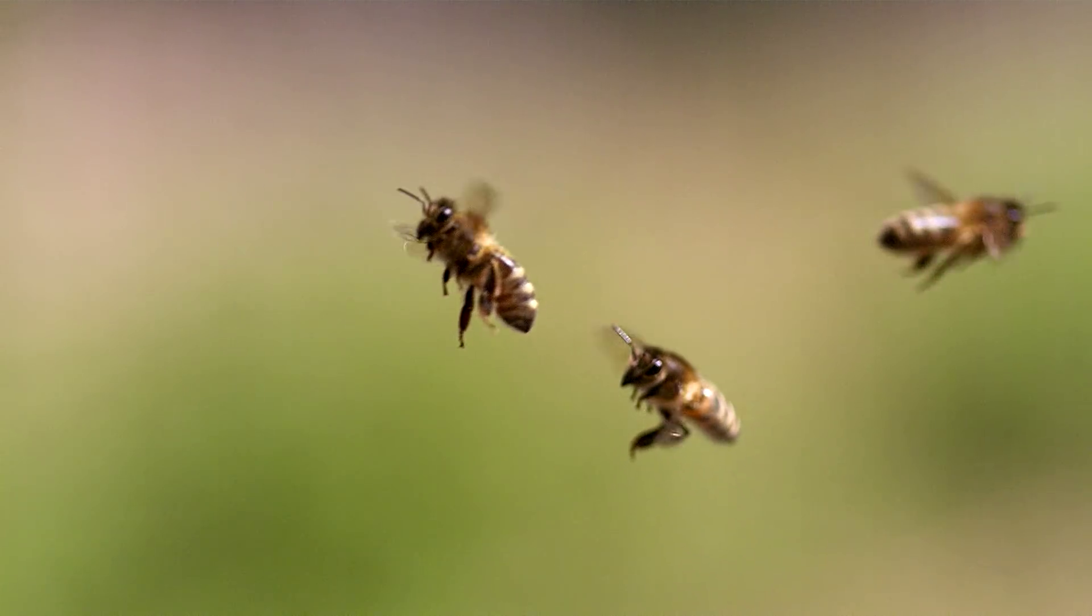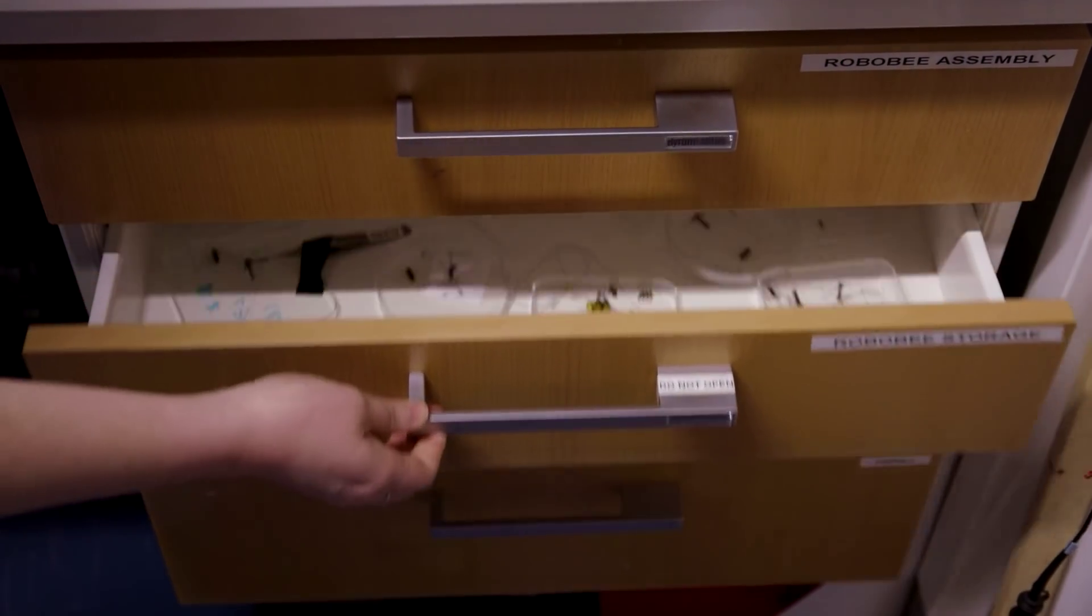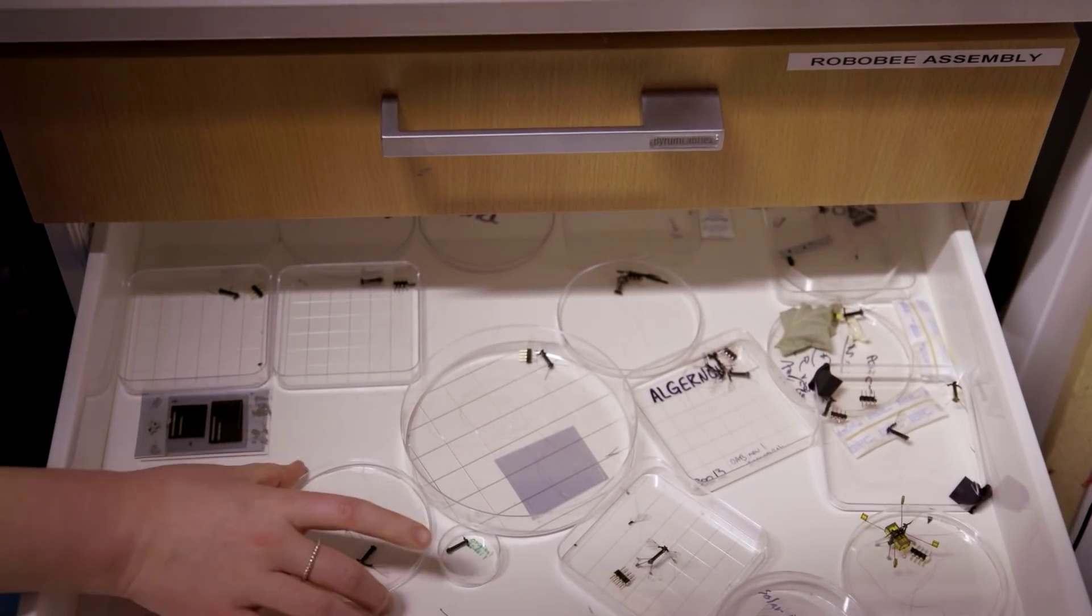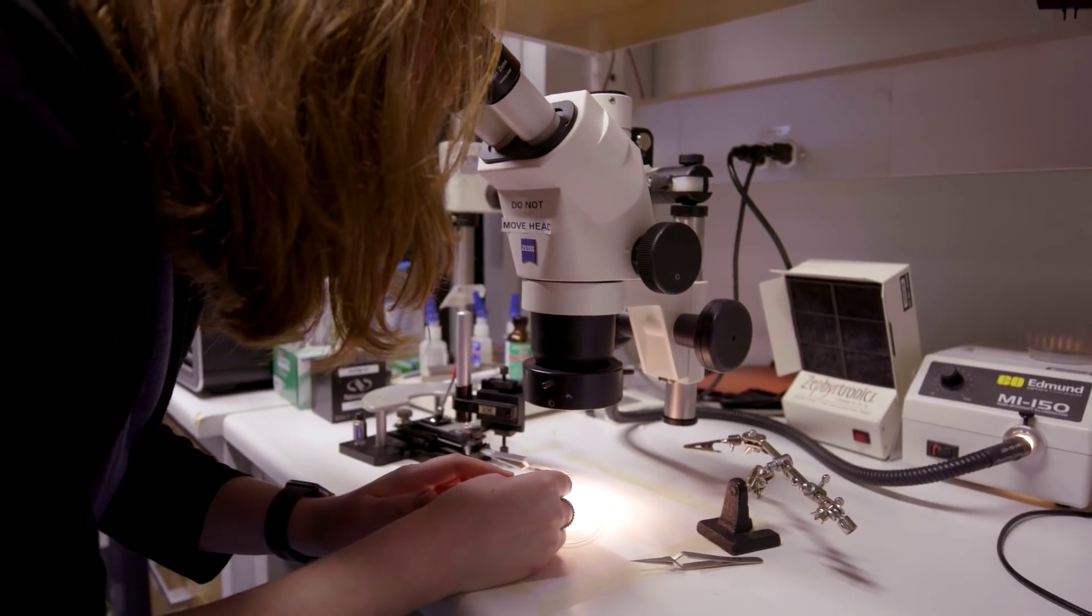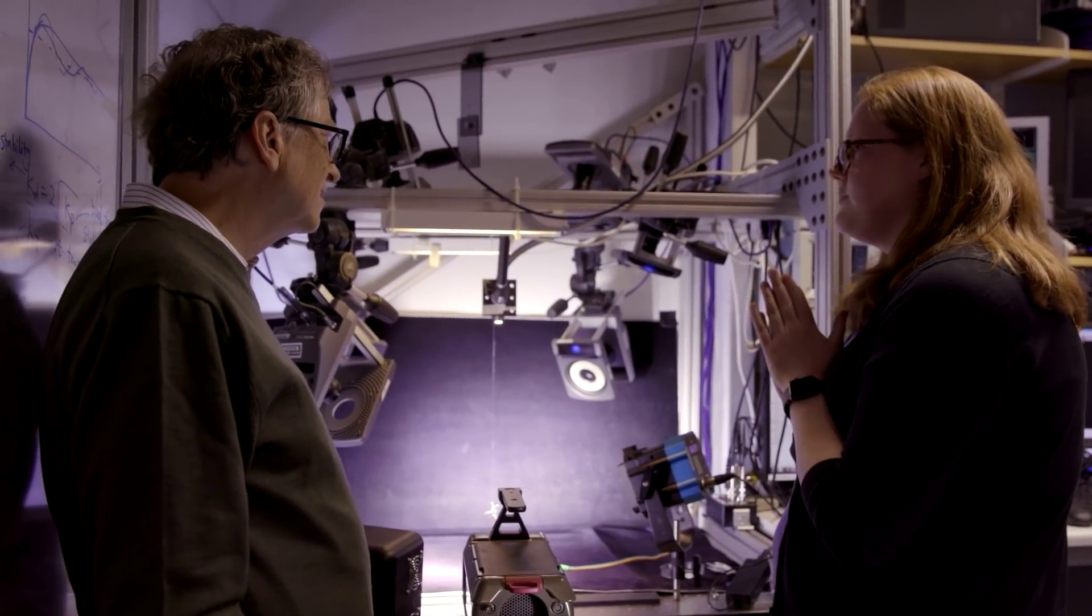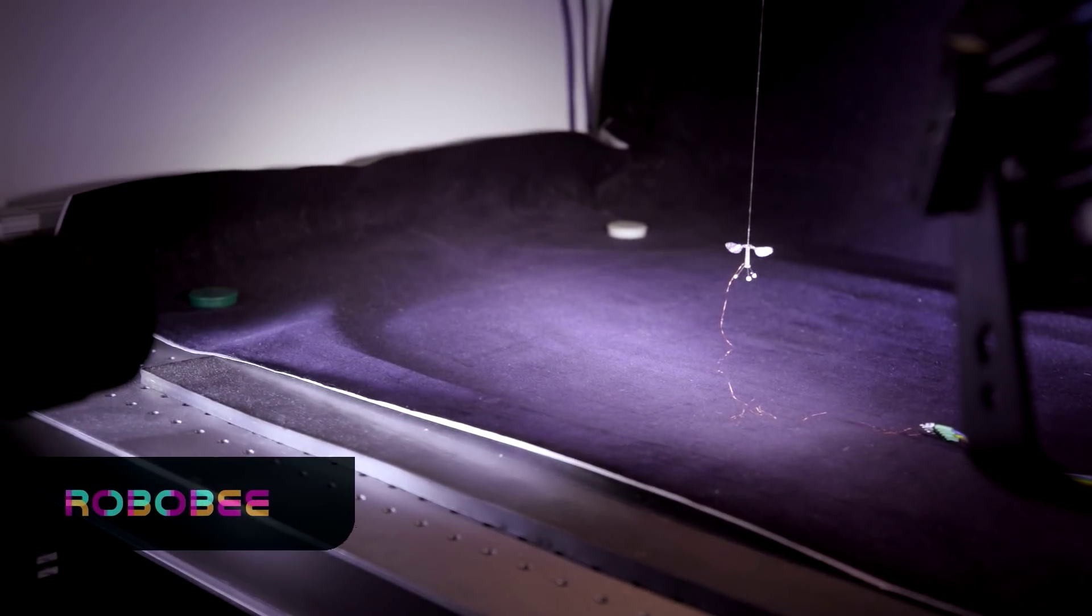And so in particular, we have a project called RoboBees, which is creating collections of small autonomous flying vehicles, inspired by and of similar scales as insects. You can certainly envision them in uses where you wouldn't want to put a human or an animal. So hazardous environments, exploration, search and rescue.